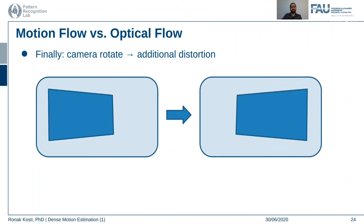Another issue is a rotational camera movement. For example, if you take an image of a rectangle from the left-hand side and rotate your camera to take the same image from the right-hand side, there is no direct translation where each pixel has moved with a fixed magnitude. So there are different aspects to both motion flow and optical flow when considering how to compute the motion.